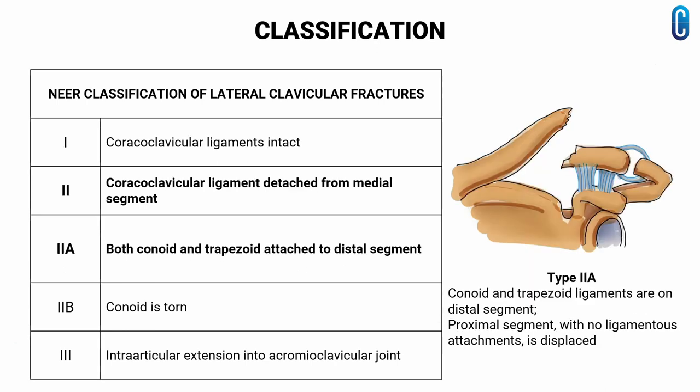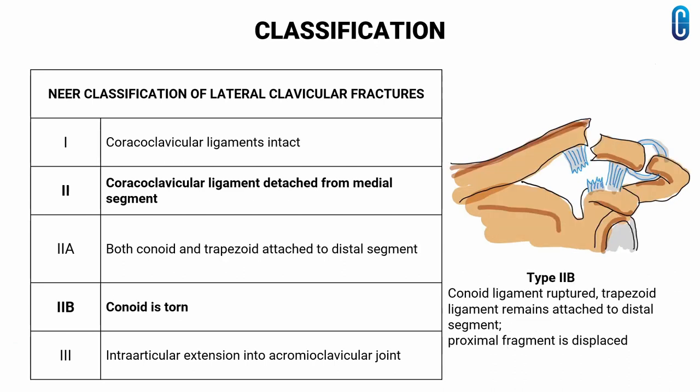In type 2, the coracoclavicular ligaments are detached from the medial segment. In type 2a, the coracoid and trapezoid ligaments are on the distal segment and the proximal segment, with no ligamentous attachment, is displaced. In type 2b, the coracoid ligament is ruptured while the trapezoid ligament remains attached to the distal segment.